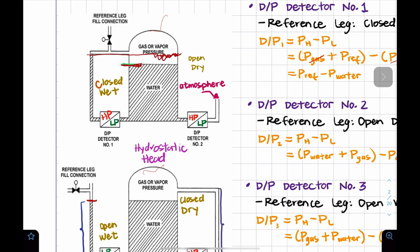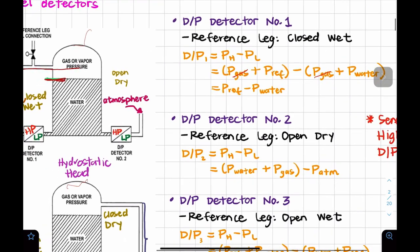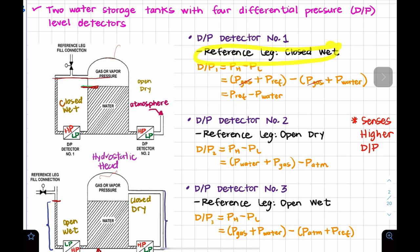When the liquid level in the tank goes down, the pressure applied to the low pressure side decreases, and the differential pressure increases. As a result, differential pressure and transmitter output are inversely proportional to the tank level. The formula for differential pressure is always: ΔP = P_high − P_low. For detector one, the high side is the reference leg, and the formula becomes: ΔP = (P_reference + P_gas) − (P_water + P_gas).